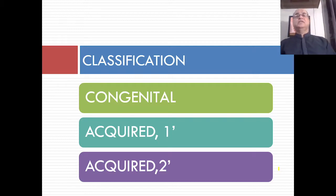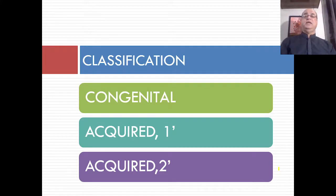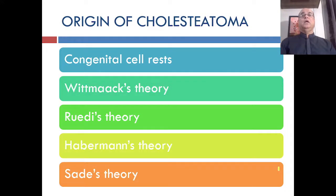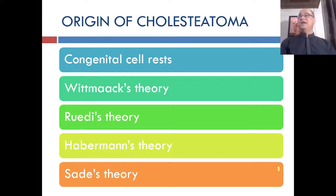Cholesteatoma is classified into congenital and acquired. Acquired can be primary acquired and secondary acquired. The squamous epithelium enters the middle ear cleft according to many theories of origin, including congenital cell rests, Wittmaack's theory, Rudy's theory, Habermann's theory, and Sade's theory.